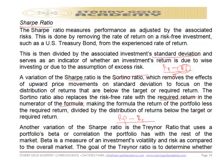To clarify: the Sortino ratio replaces the risk-free rate with the required rate of return. So the formula becomes portfolio return minus required return, divided by the distribution of returns below the target or required return. The required return acts as the mean, and those returns below it go in the denominator.